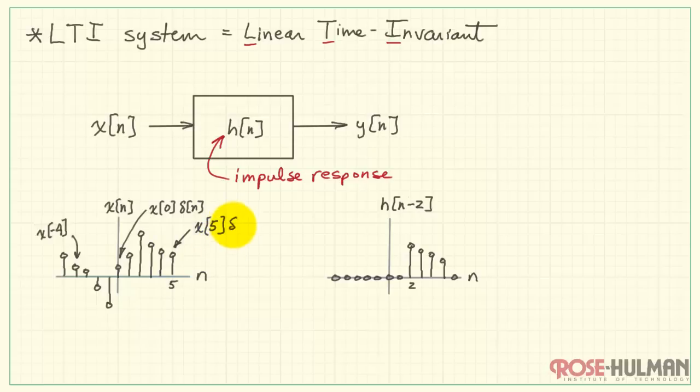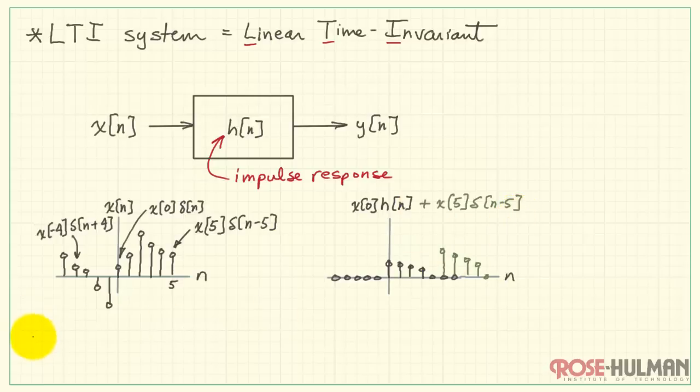Now the interesting thing here is that I can multiply each one of these by an appropriately shifted delta function. In this case, I would have it delayed by 5 values. This would be n minus 5. Here we would have the delta function advanced. This would be n plus 4. Now the reason this is interesting is because we see that this scaled delta function passing through the system produces a scaled impulse response.